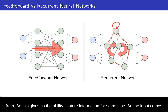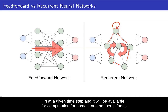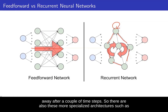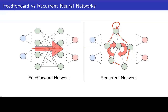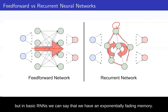This gives us the ability to store information for some time. The input comes in at a given time step and it will be available for computation for some time, then it fades away after a couple of time steps. There are also more specialized architectures such as LSTMs that have the ability to keep track of information for arbitrarily long times. But in basic RNNs, we can say that we have an exponentially fading memory.